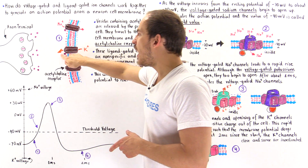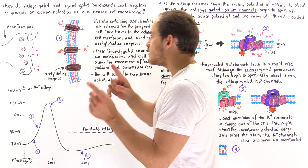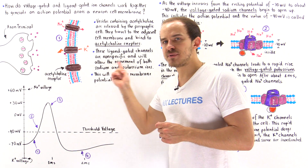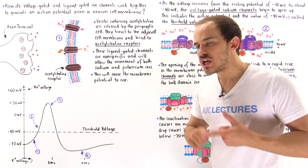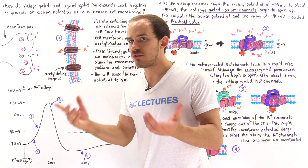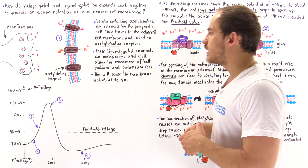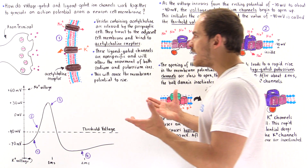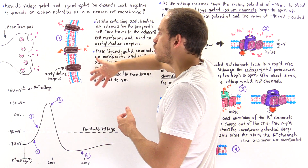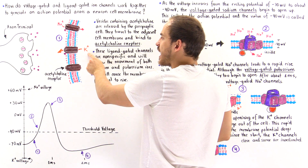When acetylcholine binds, it causes the opening of these ligand-gated ion channels. These channels are non-specific, meaning they allow the movement of not only sodium ions down their electrochemical gradient, but also potassium ions down their electrochemical gradient. We have many more potassium molecules on the inside than on the outside.